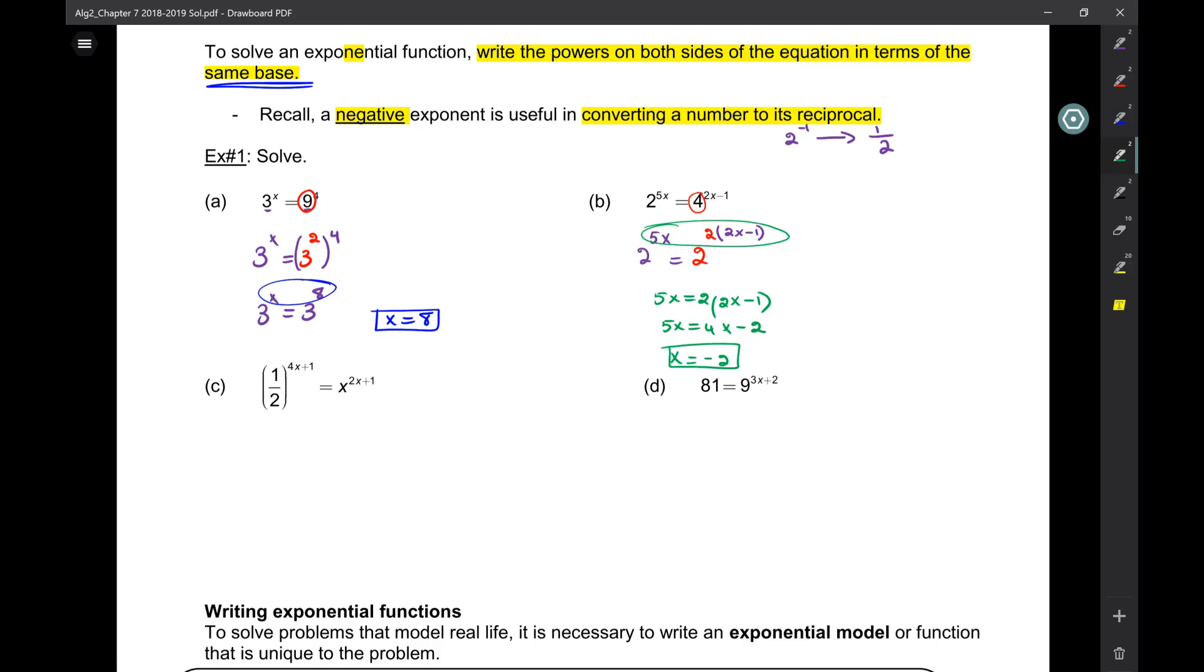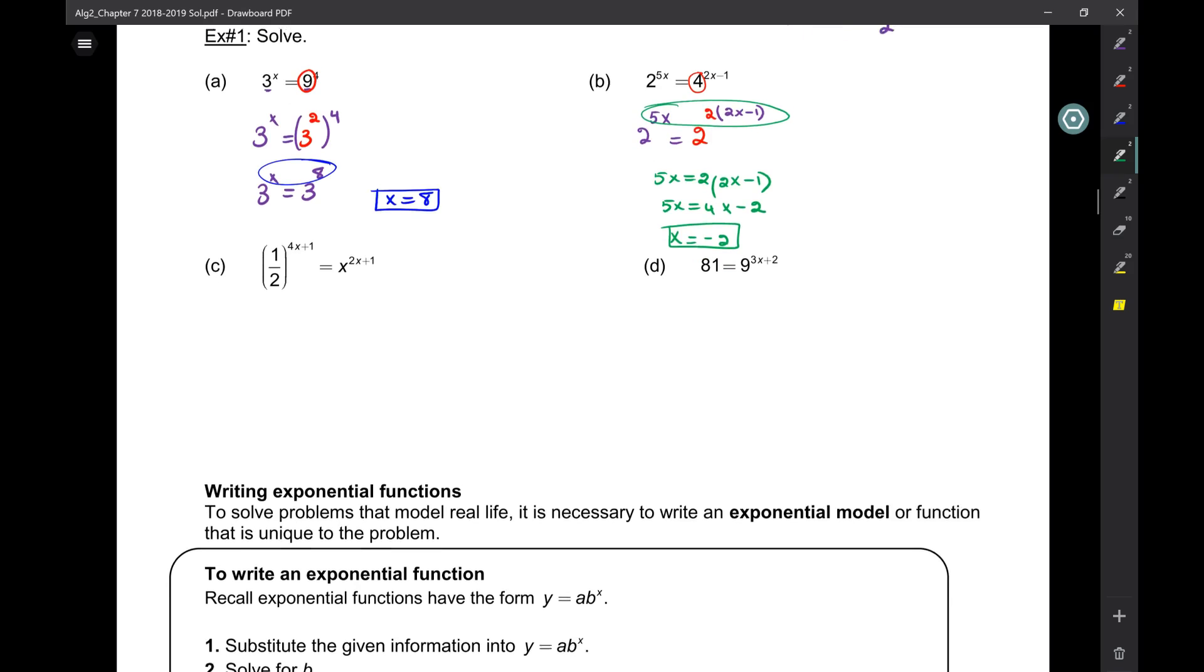Okay. Now that I have the same base, I could set these equal to each other. So 5x is 4x minus 2. So x is negative 2. These are exponential functions, right? What is the domain of all exponential functions? All real numbers. If all numbers work for these x's, then there is no reason to check your answers.